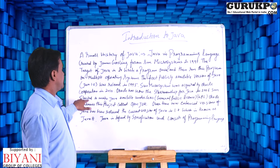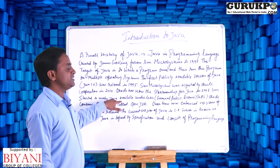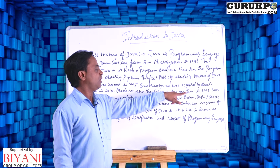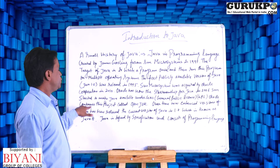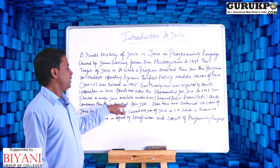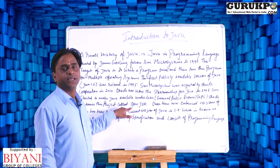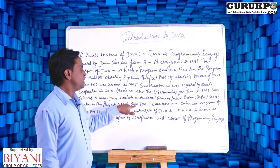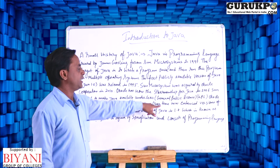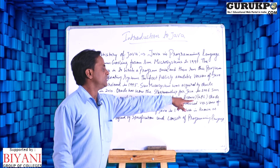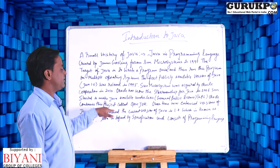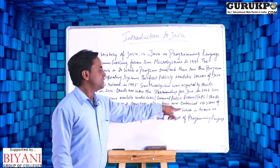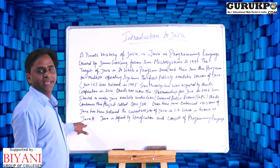In 2006, Sun started to make Java available under GNU General Public License (GPL). Oracle continues this project, which is called OpenJDK. Over time, new versions of Java have been released. The current version of Java is 1.8, which is known as Java 8.